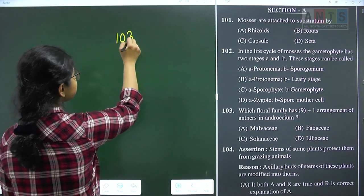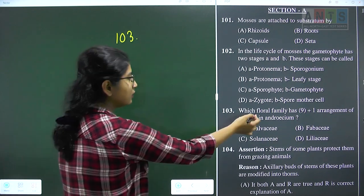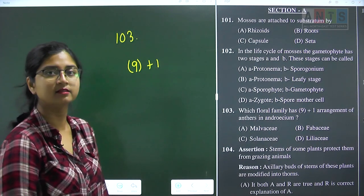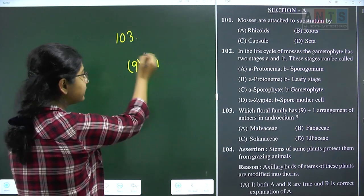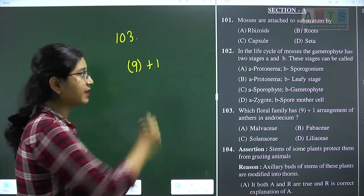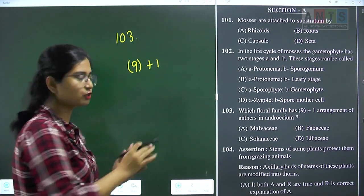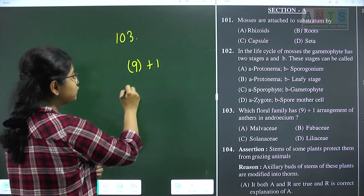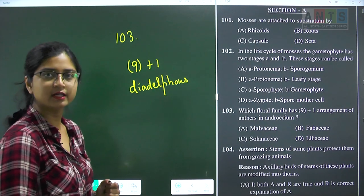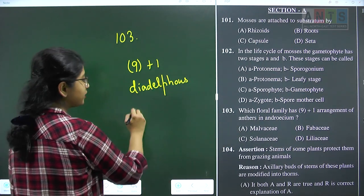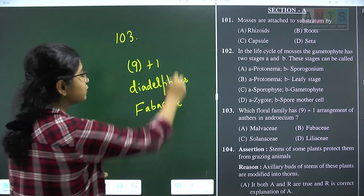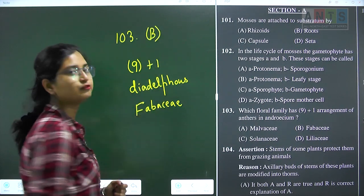Question 103 is from morphology of flowering plants: which floral family has 9+1 arrangement of anthers in the androecium? Total 10 stamens, with 9 together in one bunch and 1 separate — this is the diadelphous condition. This is a characteristic property of the family Fabaceae. So question 103 answer is option B, Fabaceae.